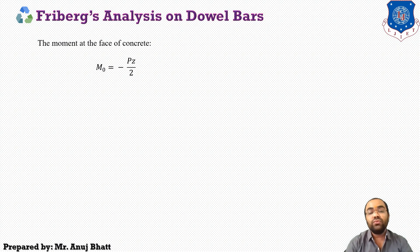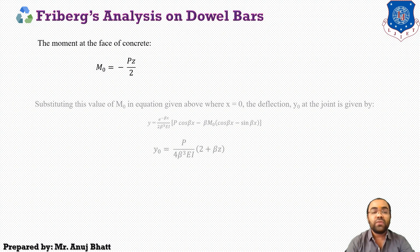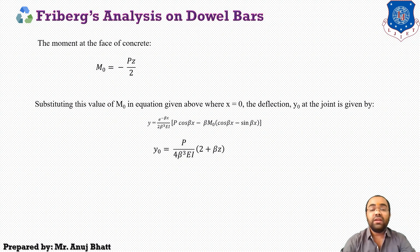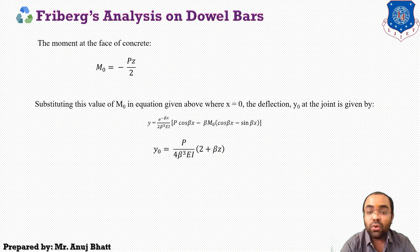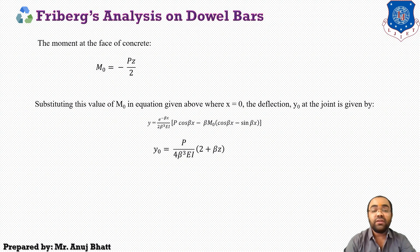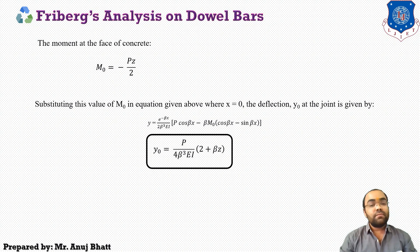Substituting this M0 value into the deflection equation with X equal to 0, we get Y0 equals P divided by 4·beta³·EI, into (2 plus beta·Z). When X equals 0, cos(beta·X) equals 1 and sin(beta·X) equals 0. Substituting M0 equals minus PZ/2, the beta·M0 term becomes plus beta·PZ/2, and combining with P in front gives Y0 equals P upon 4·beta³·EI into (2 plus beta·Z).